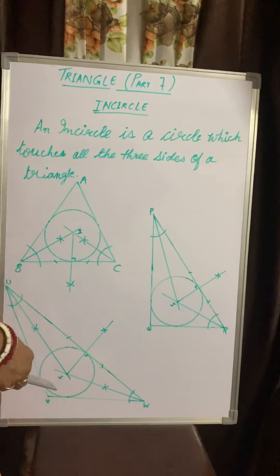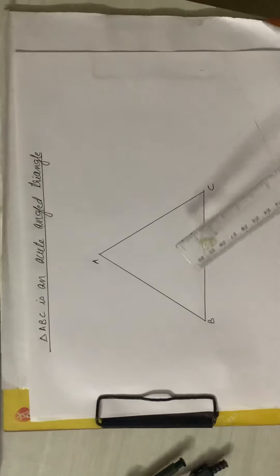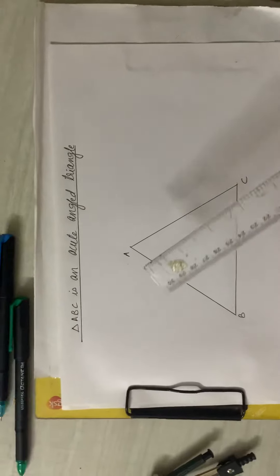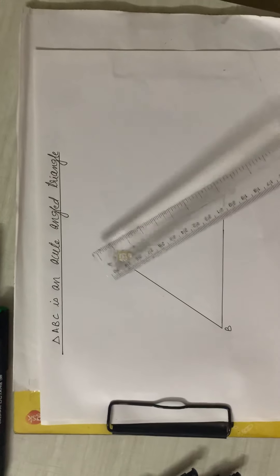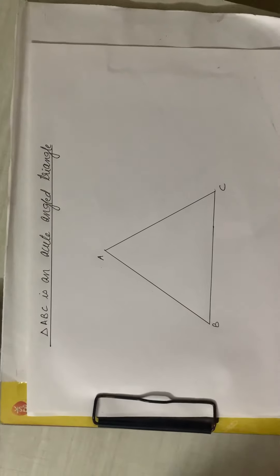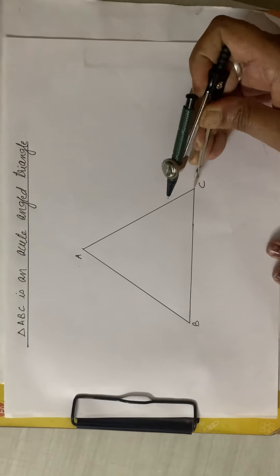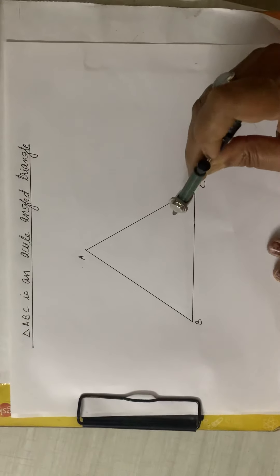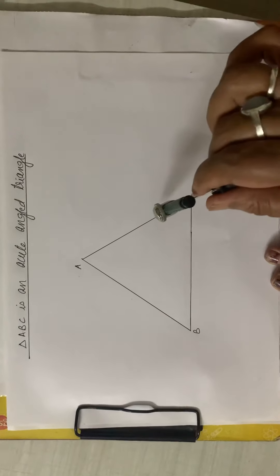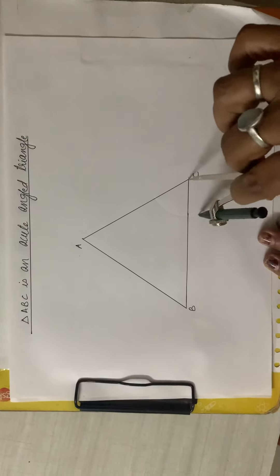Now let us draw the in-circle. The first triangle is triangle ABC, an acute-angled triangle. Let us consider any two angles. From C, I have taken some distance in the compass and I will draw an arc.